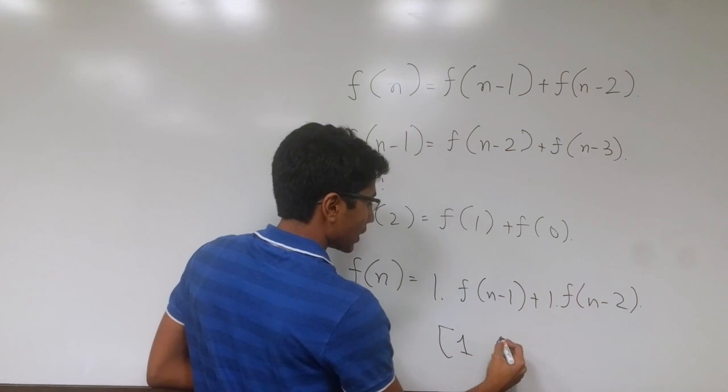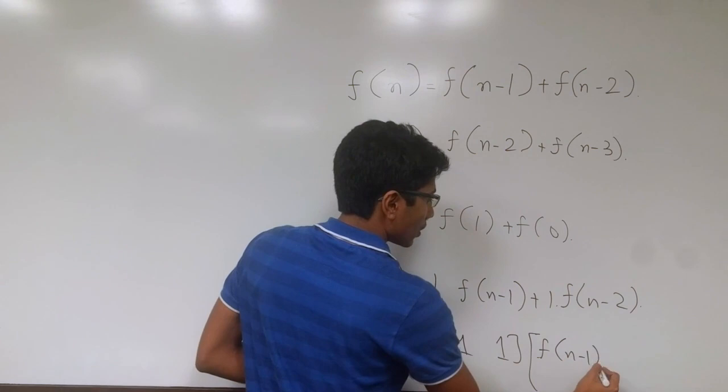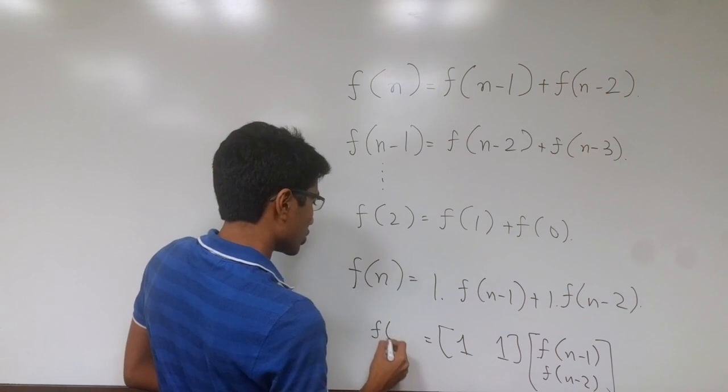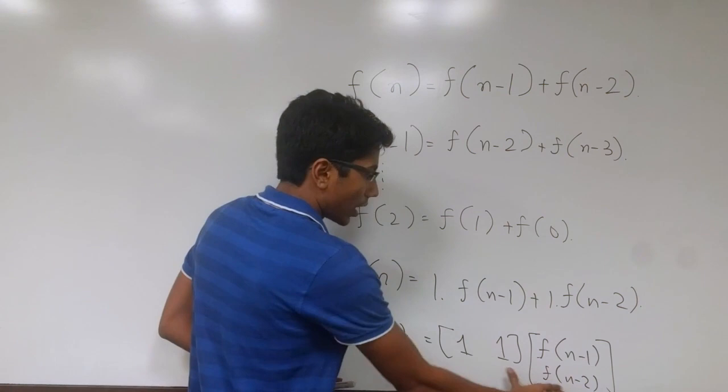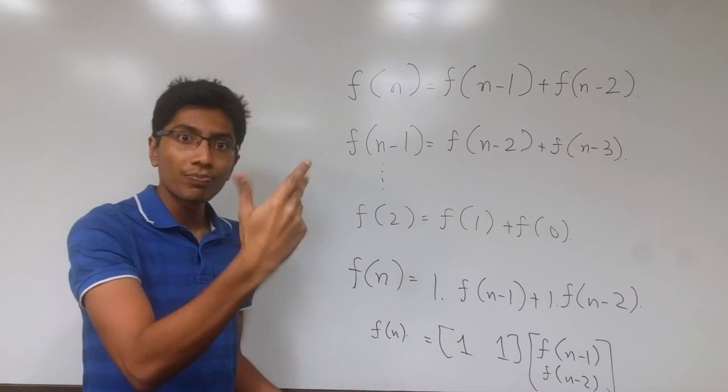So what we are going to do is represent any given term as these two base terms. Coming here, you see that this is a sum of products — a sum of products of 1 into f(1) plus 1 into f(0). f(2) is very simple, but it's a big insight. Because what we can do now is represent this as a matrix multiplication. So this is the row that we have and this is the column that we are multiplying it with.